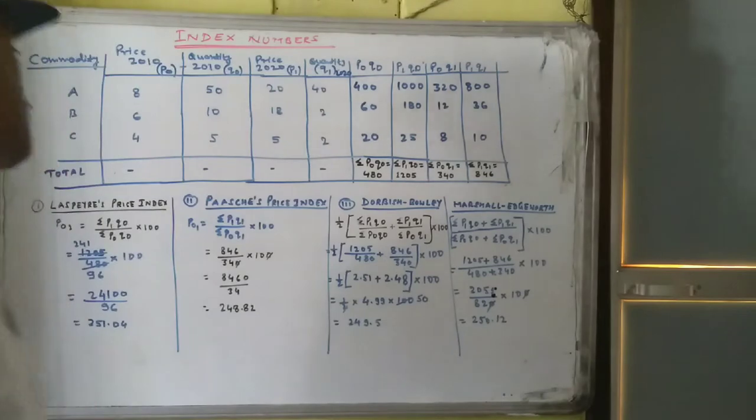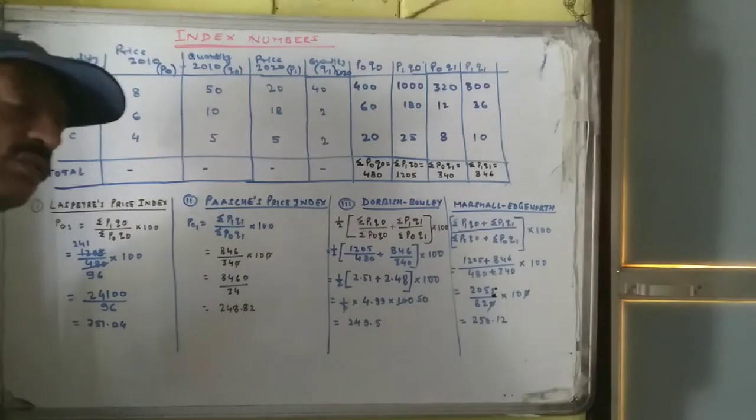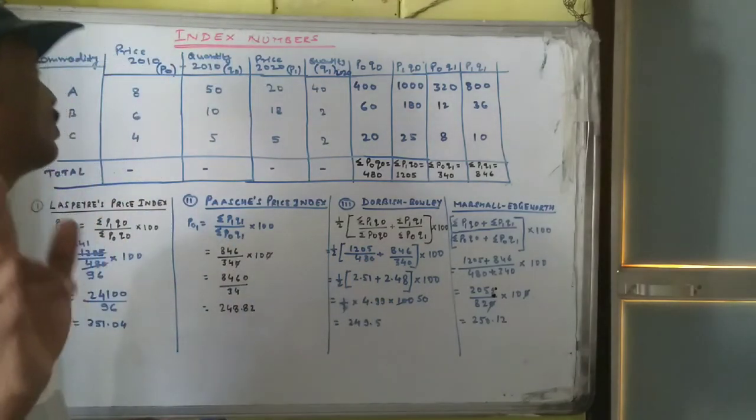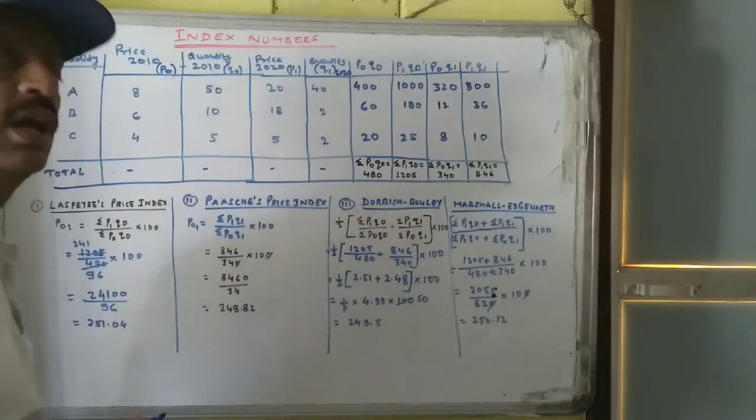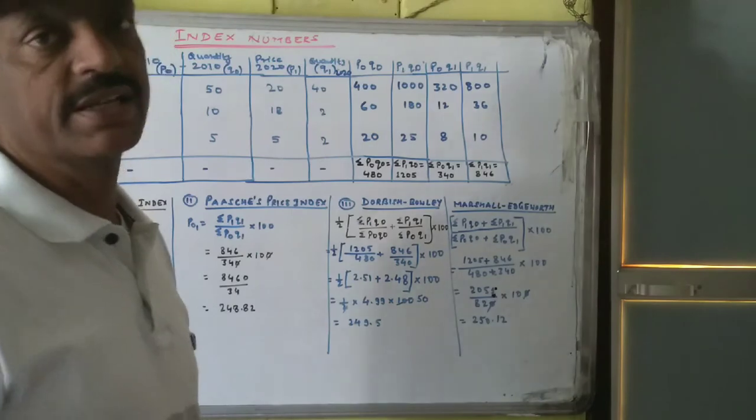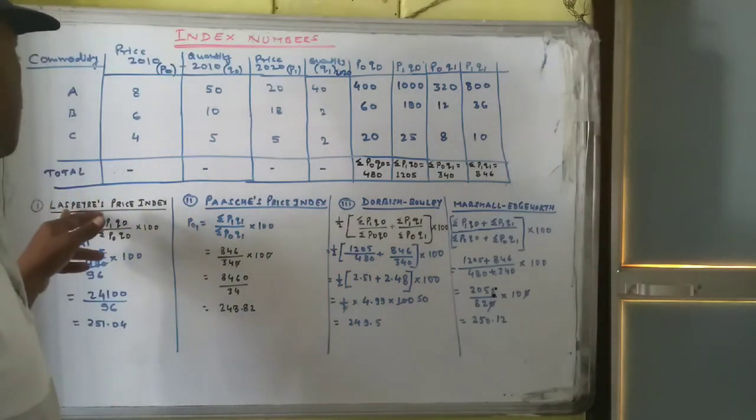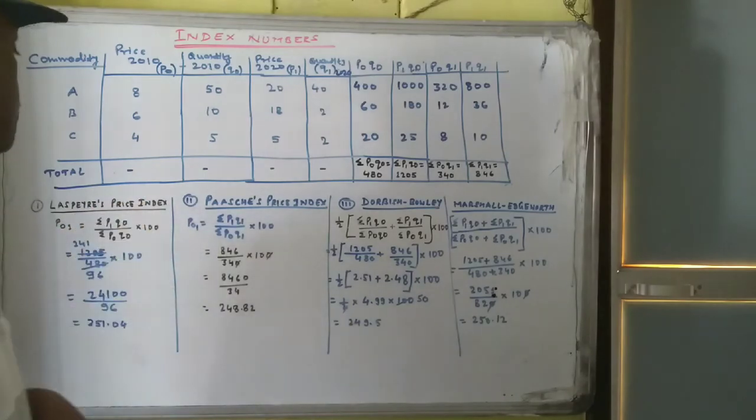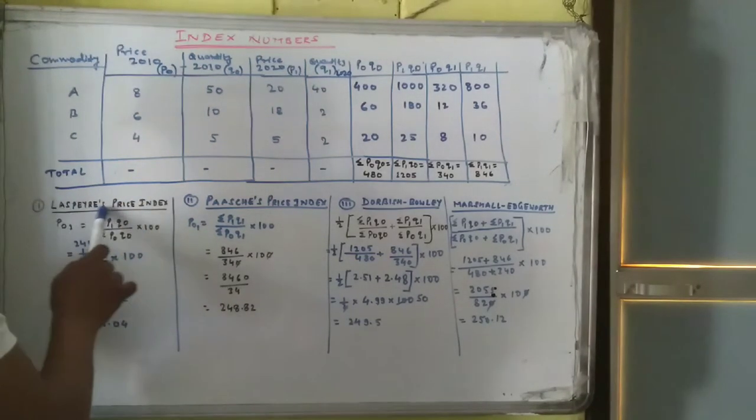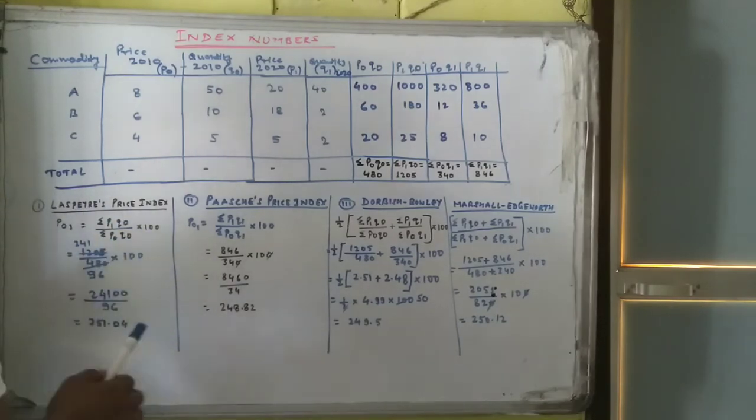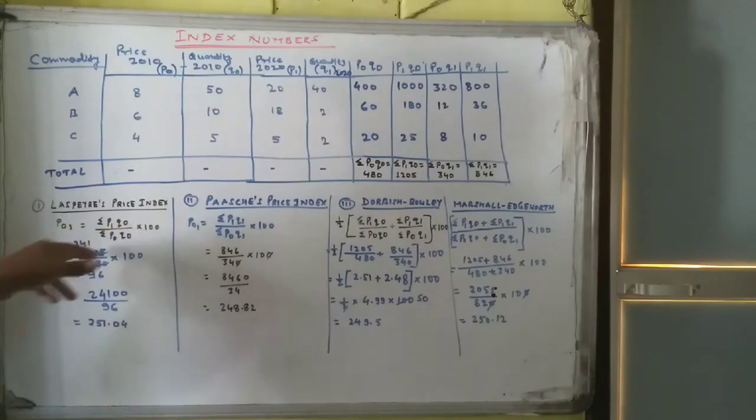Now the formulas are here. You have to be very careful towards the formula and towards the calculation. Only these two things are important in such type of questions, mainly the questions of statistics. So formula is there. This one is the Laspierre Price Index. Laspierre Price Index formula is Sigma P1Q0 upon Sigma P0Q0 into 100.